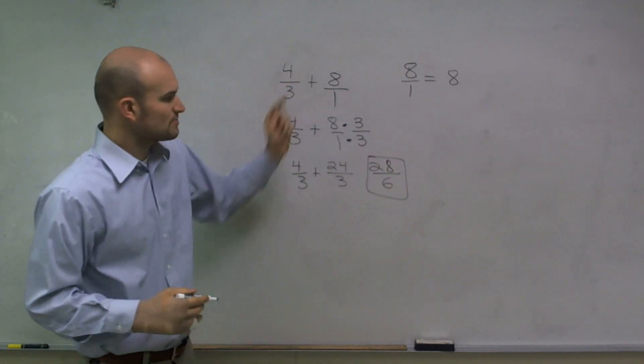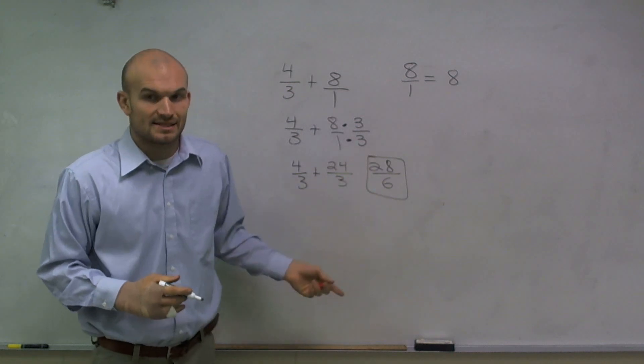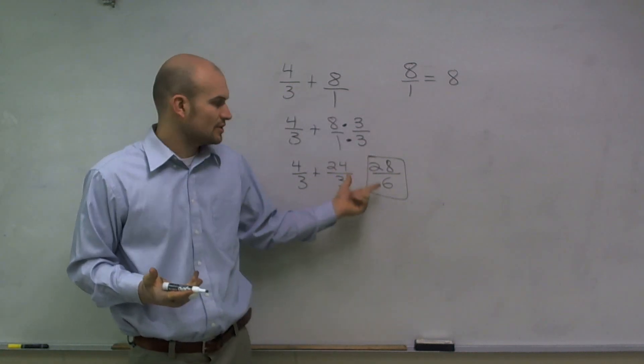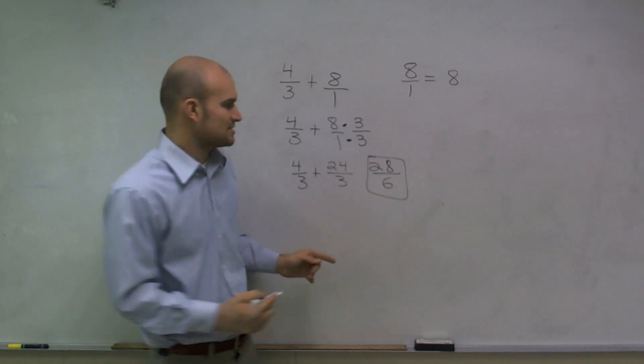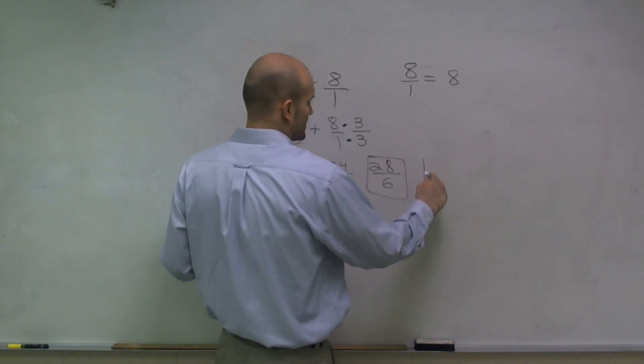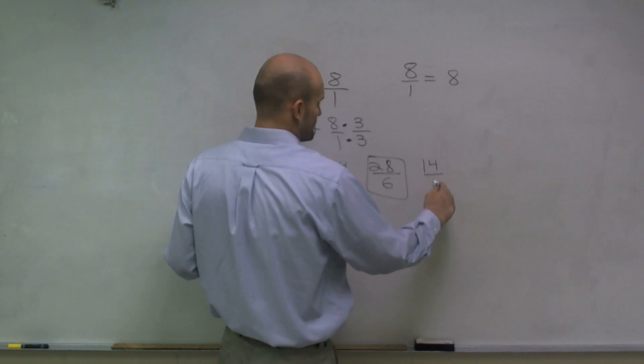So therefore, 4 thirds plus 8 is 28 sixths, which, if I wanted to go and see, you know, you can reduce this now, actually. So let's see if we can divide this by 2. I can divide both by 2, so I get 14 thirds.